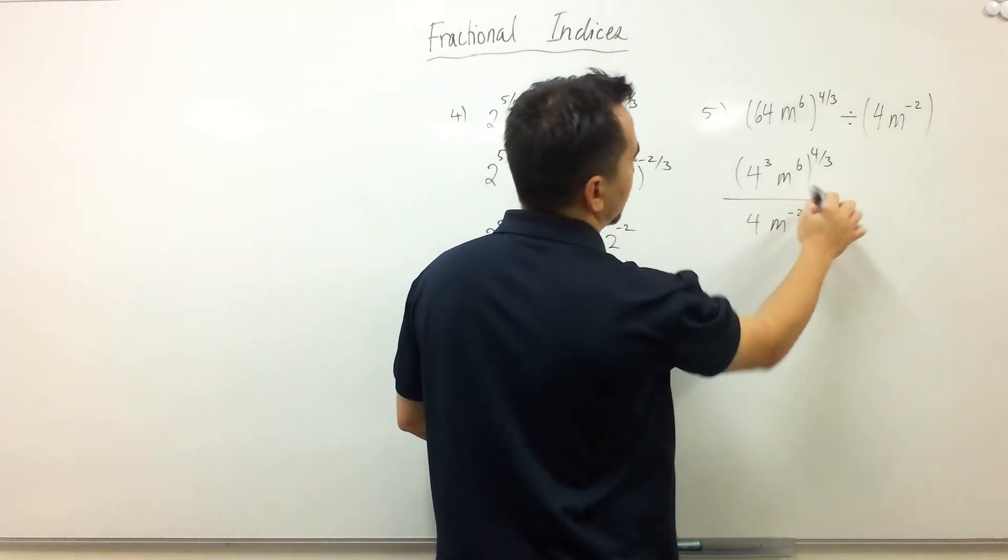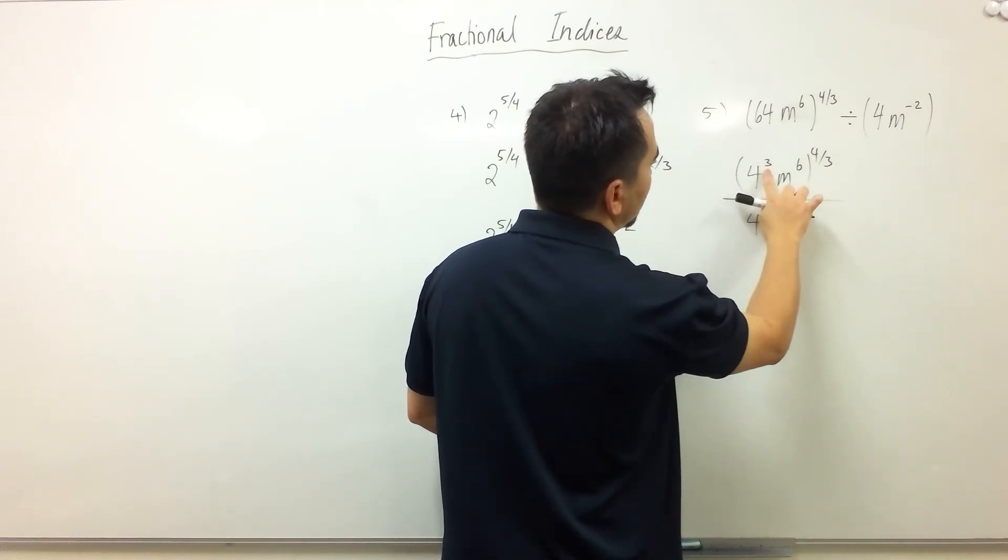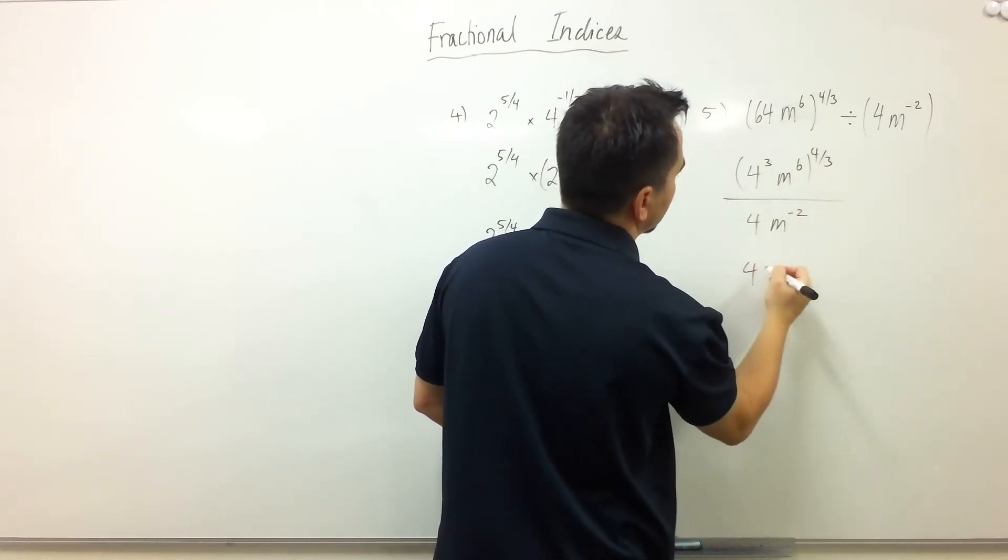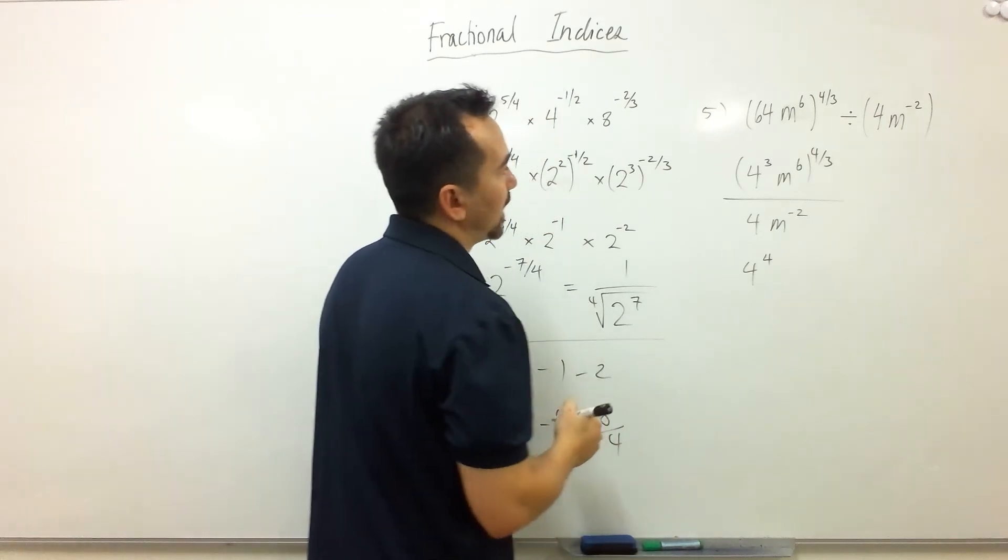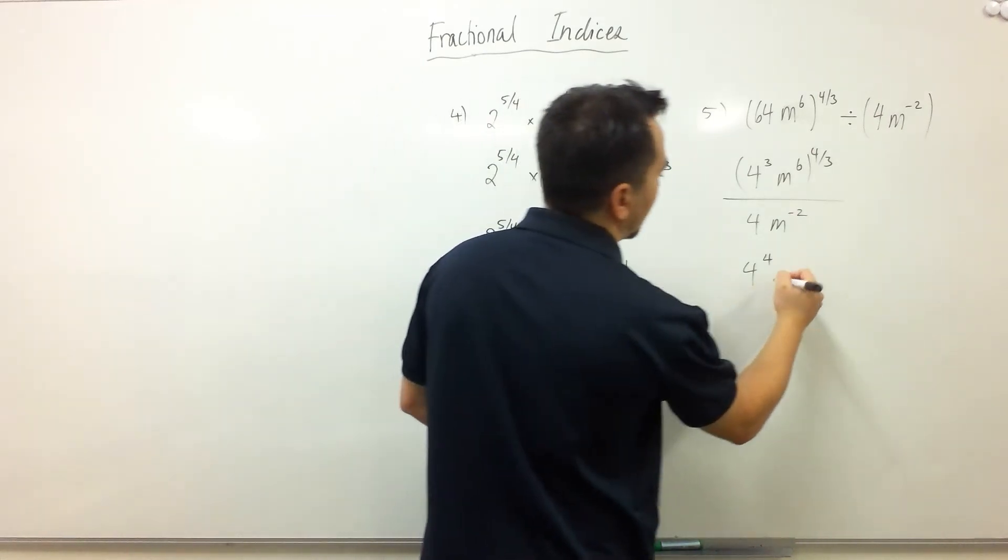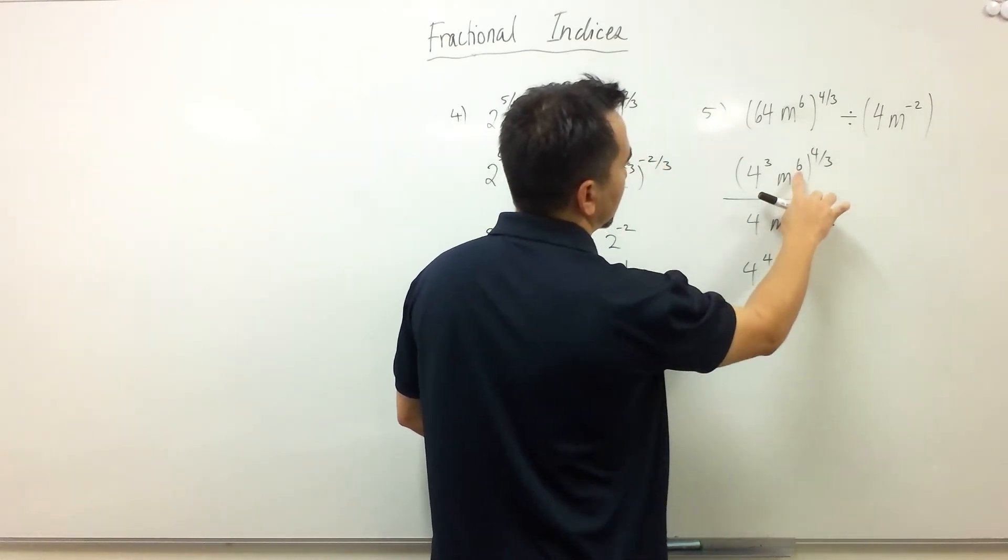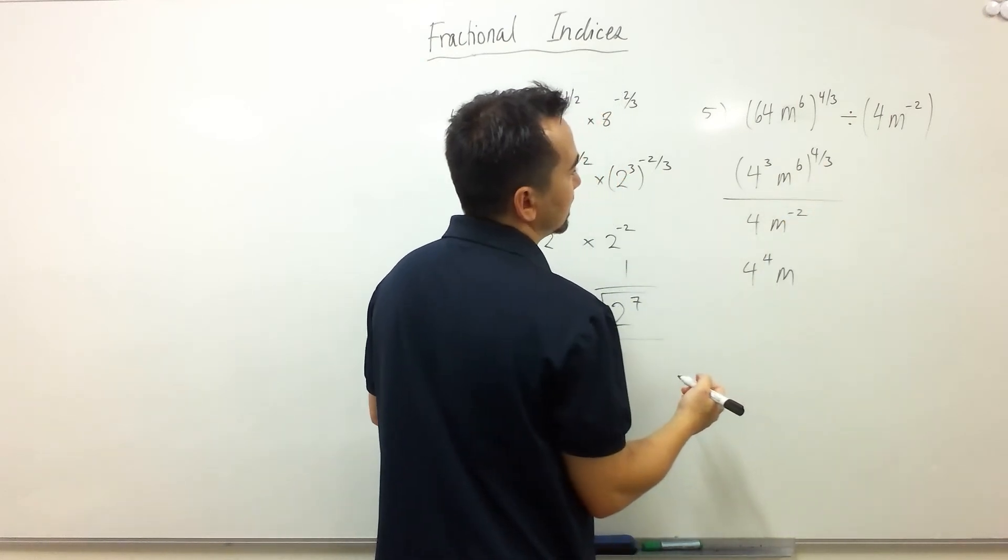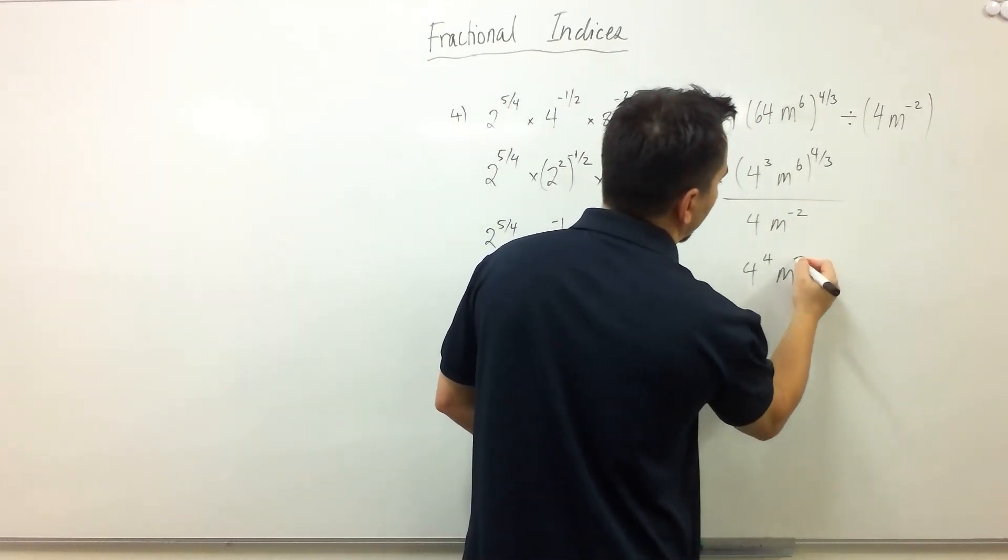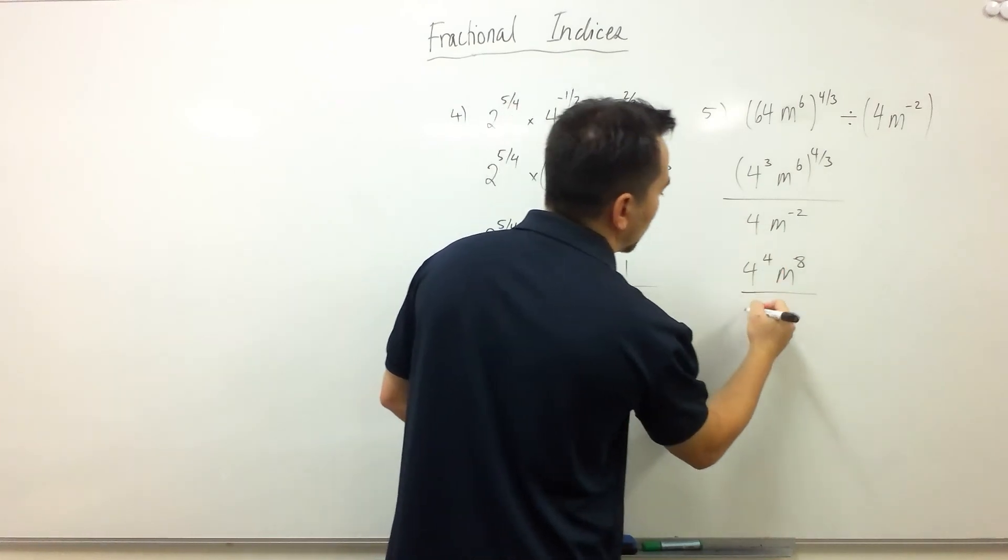Let's expand these brackets. 3 to the 3 times 4 thirds is 4 to the power 4. M to the power 6 times 4 thirds is the same as M to the power 8. This is a 4.